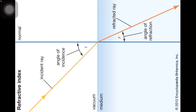The refractive index can be expressed in terms of the speed of light. Light travels at different speeds in different media. The speed of light in air is approximately 3 × 10⁸ meters per second.